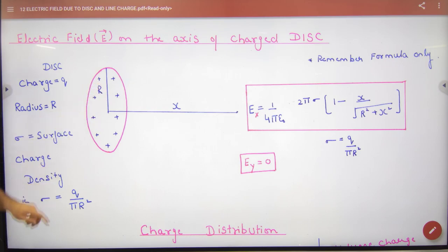So, think that the total charge is q and the area is pi r square. So what will be density? q by pi r square.